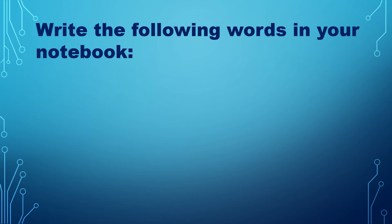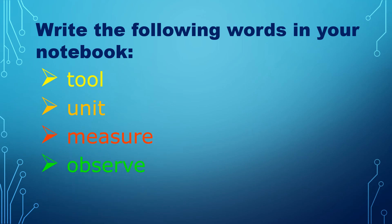For your activity in this lesson, in your notebook, write the following words — observe correct spelling. Here are the words: repeat after me. Tool, unit, measure, observe, safety. Again: tool, unit, measure, observe, safety.